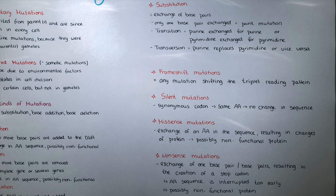The last kind of mutation I will talk about is the nonsense mutation. Here an exchange of one base pair or many base pairs, or also a deletion, insertion, or duplication — whatever change in the sequence — might lead to the creation of a stop codon. The amino acid sequence will be interrupted pre-terminally, which can happen very early in the sequence or might be just one or two amino acids before the actual stop codon would occur. Depending on where this mutation occurs within the gene, the protein might be non-functional.